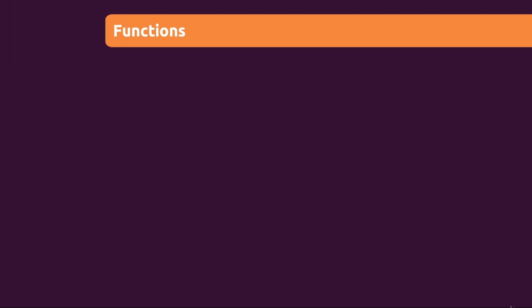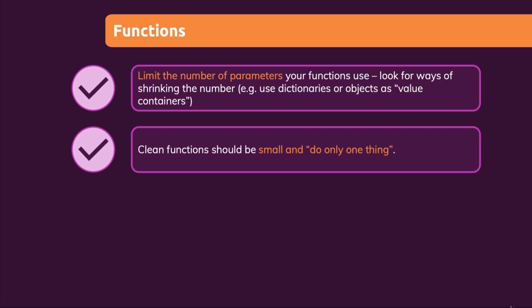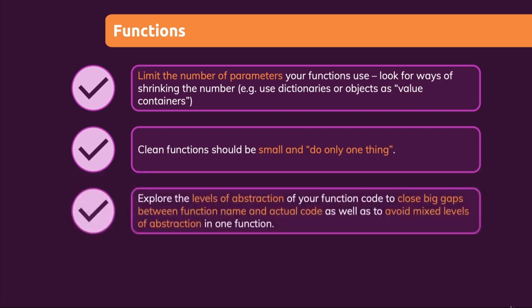Functions are the meat of most programs — that's where the majority of your logic resides, and therefore it's key to write clean functions. That all starts with the parameters: limit the number of function parameters and try to keep the list short. Consider using dictionaries or objects to group multiple parameters into one parameter, making functions easy to call and the code where a function is called easy to read and understand. Clean functions should be small functions that do just one thing. This one thing is related to the levels of abstraction, so always make sure that there is no big gap between the level of abstraction implied by a function name and the actual code in the function, and that you're not mixing multiple levels of abstraction in one function.